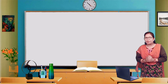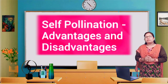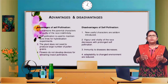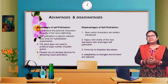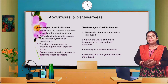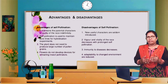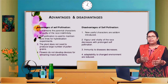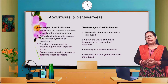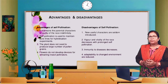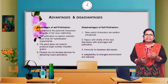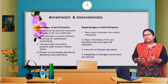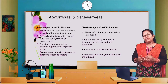Now we will study the advantages and disadvantages of self-pollination. First, self-pollination preserves the parental traits and characters. Since only one parent is involved, all the parental characters are carried to the next generation. Another advantage is that in bisexual flowers, self-pollination is ensured as both stamens and carpels mature at the same time.